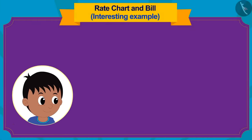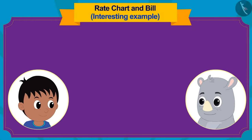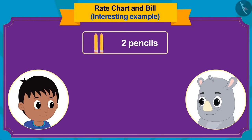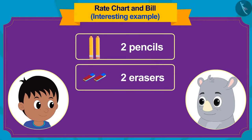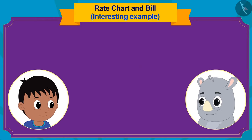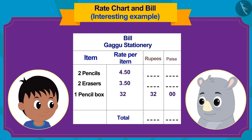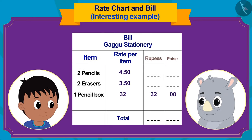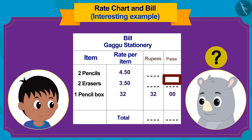Raju purchased two pencils, two erasers, and one pencil box from Gaggu. Children, can you fill the empty spaces in the bill made by Gaggu?